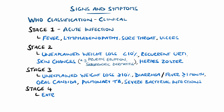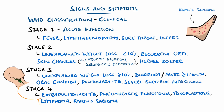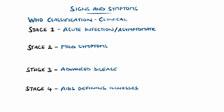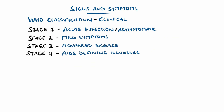Stage 4 includes a wide range of more advanced disease, such as extrapulmonary tuberculosis, pneumocystis pneumonia, toxoplasmosis, lymphoma, or Kaposi's sarcoma. The United States Centers for Disease Control uses slightly different staging based more on the CD4 count.